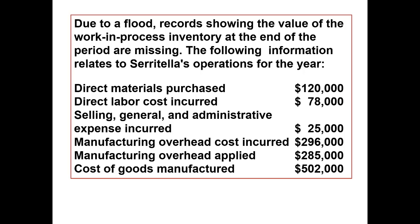Due to a flood, records showing the value of the work in process inventory at the end of the period are missing. The following information relates to Saratela's operations for the year: direct materials purchased $120,000; direct labor cost incurred $78,000; selling, general, and administrative expense incurred $25,000; manufacturing overhead cost incurred $296,000; manufacturing overhead applied $285,000; and cost of goods manufactured $502,000.